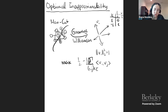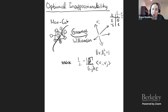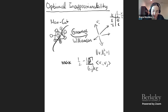This is the Goemans-Williamson algorithm. Instead of solving MaxCut directly, we solve this geometric problem of finding unit vectors that try to be anti-correlated on edges. The nice thing about this geometric problem is that it has an efficient algorithm — this is known as semi-definite programming. If you have linear constraints and linear objectives on pairwise inner products, semi-definite programming efficiently solves this problem.